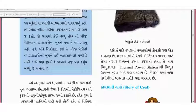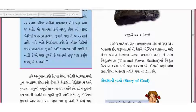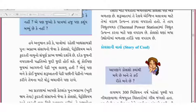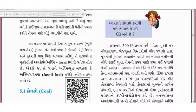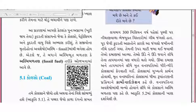કોલ્સો રસોઈ માટે, વિદ્યુત ઉત્પાદન માટે, અને ઉષ્મા ઉત્પન્ન કરવા માટે વપ્રાય છે. લગભગ 300 મિલિયન વર્ષ પહેલાં, પૃથ્વી પર નીચાણ વાળા ભેજ-યુક્ત વિસ્તારોમાં ગીચ જંગલો હતા. પૂર જેવી કુદ્રતી આફતોને લીધે આ જંગલો જમીનમાં નીચે દટાઈ ગયા.